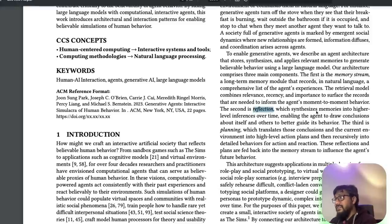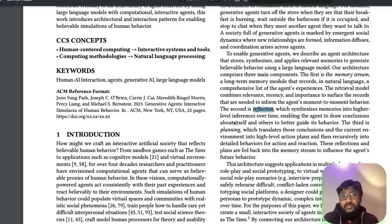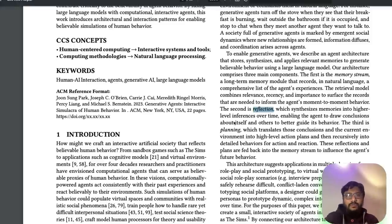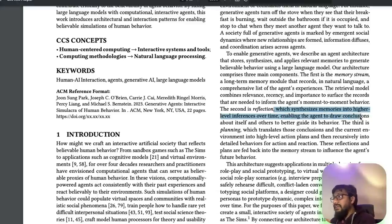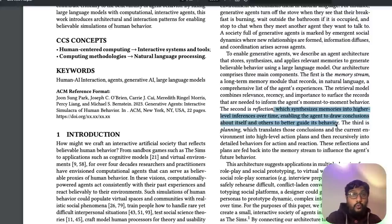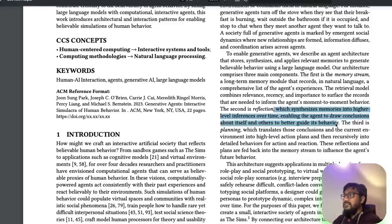The next component is reflection, which synthesizes memories into higher-level inferences over time. Just like humans have memory from yesterday and last year forming coherent long-term memory, reflection enables the agent to draw conclusions about itself and others to better guide its behavior. It helps agents reflect on who they are, what they were supposed to do, what their passion and vision are — and that guides their interactions with others.